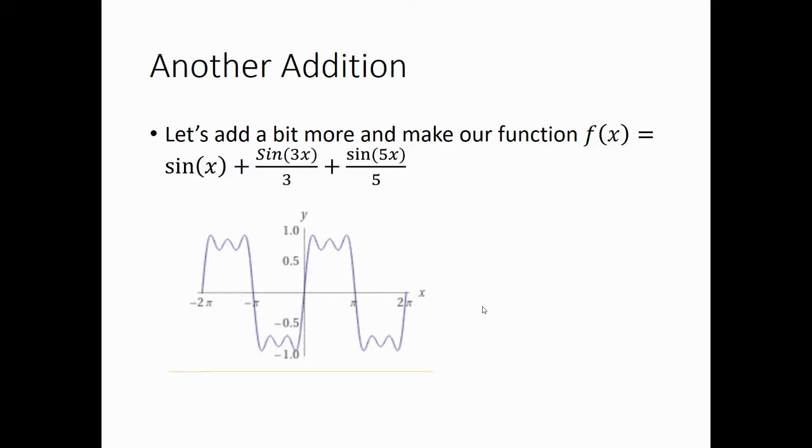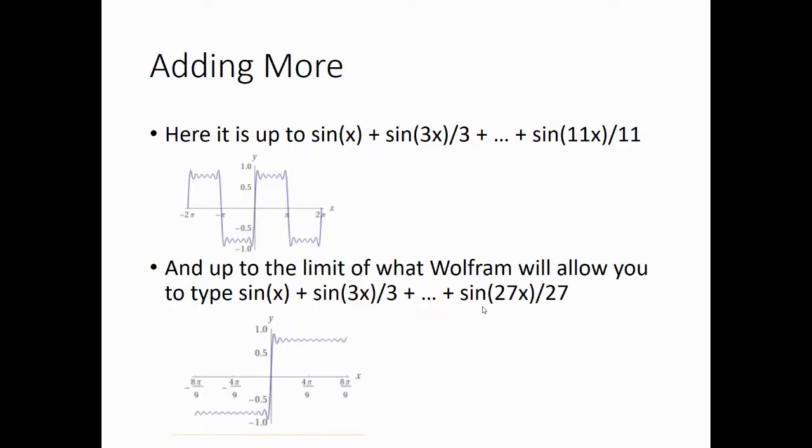So, let's add another term in. This one is sine of x plus sine of 3x divided by 3 plus sine of 5x divided by 5. And that looks even closer. Here it is up to 11, even closer and up to the limit of what Wolfram will allow you to type in, which goes up to the term sine 27x divided by 27. And you can see there that the transition is really, really quick from low to high. And the high stays very close to the 1 value and the low stays very close to the minus 1 value.